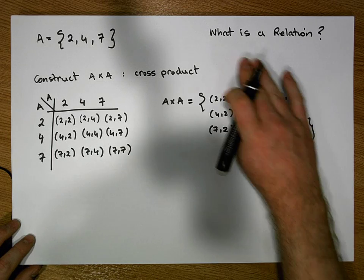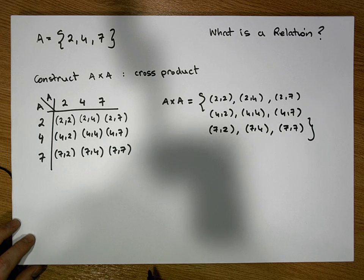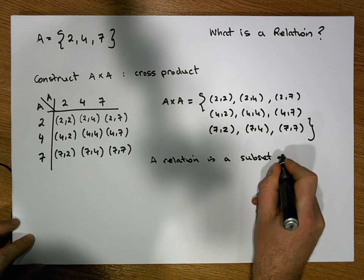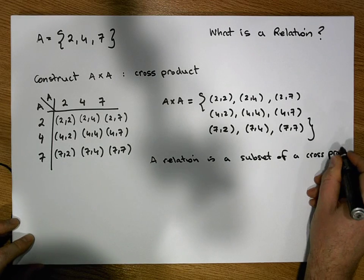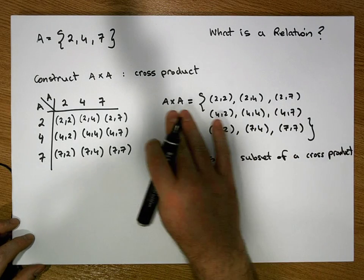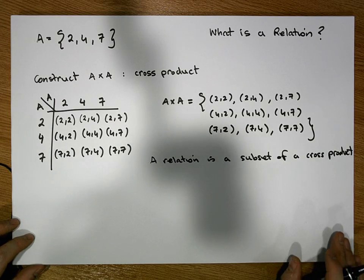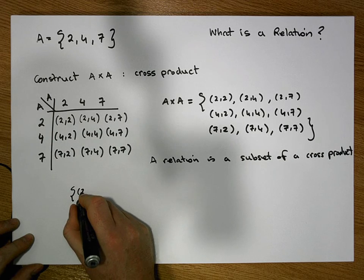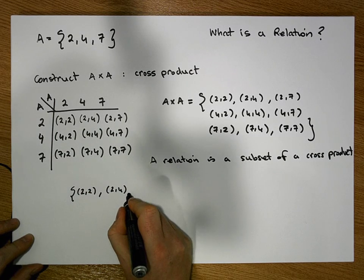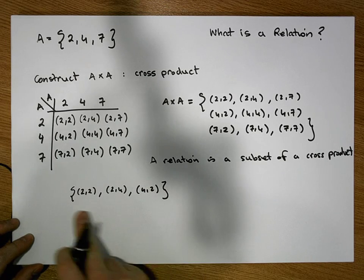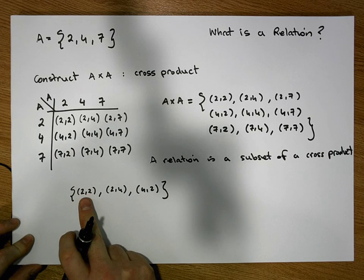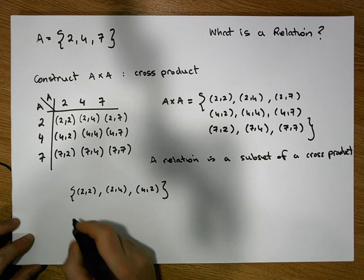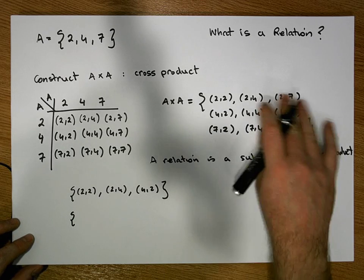By definition, a relation is simply a subset of a cross product. You're free to choose any ordered pairs from this cross product, and what you end up with is called a relation. For example, I might select (2,2), (2,4), and (4,2). This set is a subset of A cross A because all its elements are contained in A cross A, so by definition this is a relation.